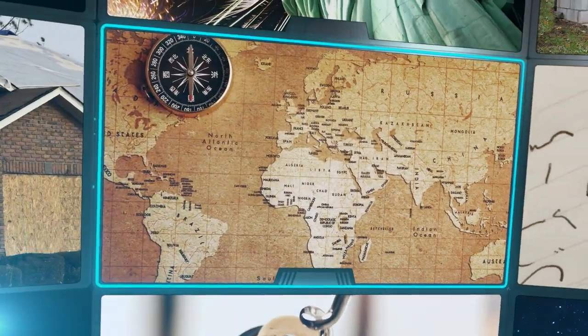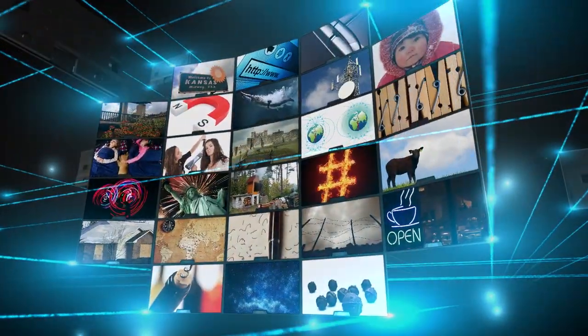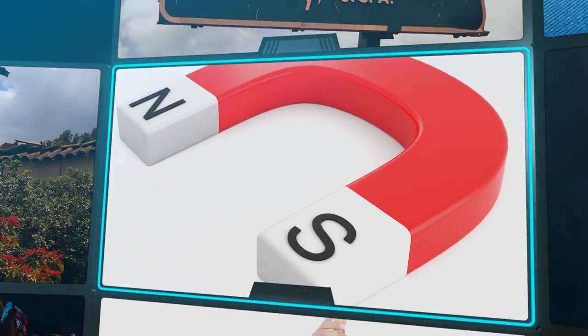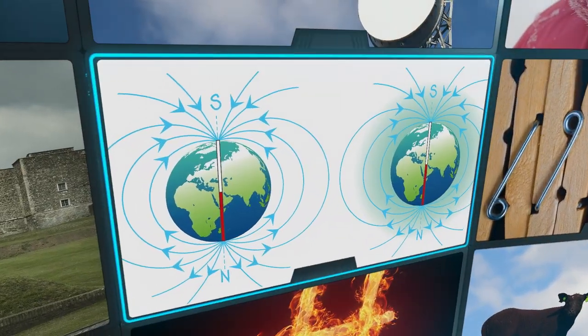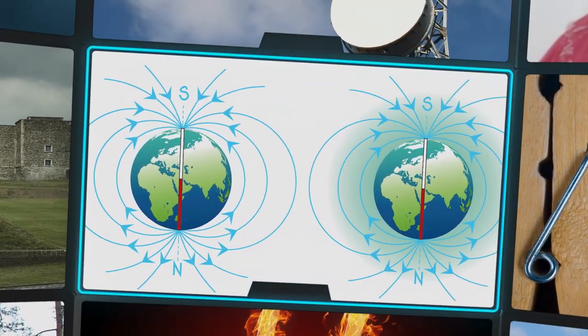So, how exactly does a compass work? It turns out the needle in a compass is actually a magnet that points north because of the Earth's natural magnetic field.